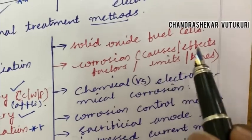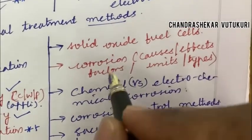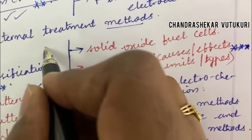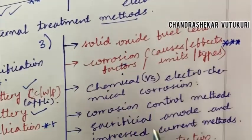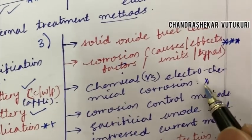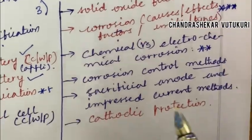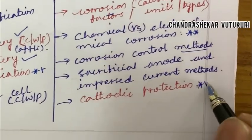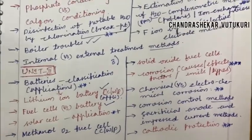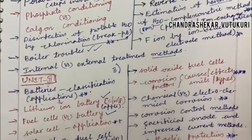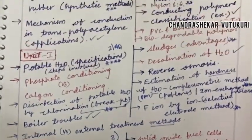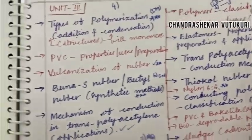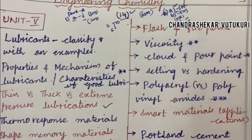The corrosion causes, effects, factors, and types may be one of the topmost questions, which may occur in the question paper as question 3AB or CD. Chemical versus electrochemical corrosion, and corrosion control methods — sacrificial anode and impressed current methods and cathodic protection — may be short questions. Dear students, I haven't highlighted separate short questions here. If you are thorough with all the questions where I have made a star mark, you are supposed to work them out in the form of long as well as short. There is no separate preparation needed for the short questions.